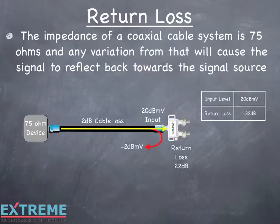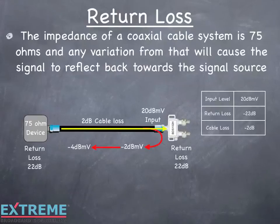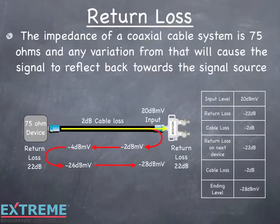We had 20 dBmV on the input, and now we subtract 22 dB from that for a result of minus 2 dBmV. The reflected signal travels back through the coaxial cable and loses an additional 2 dB, so on the output of the 75-ohm device we have minus 4 dBmV. The 75-ohm device also has 22 dB of return loss, so the signal is again attenuated by 22 dB and reflected back towards the splitter at minus 26 dBmV. The signal again travels through the coaxial cable with 2 dB of loss and arrives back at the input of the two-way splitter at minus 28 dBmV — at this level, the signal is attenuated enough that it should not cause any impairments to the original signal.